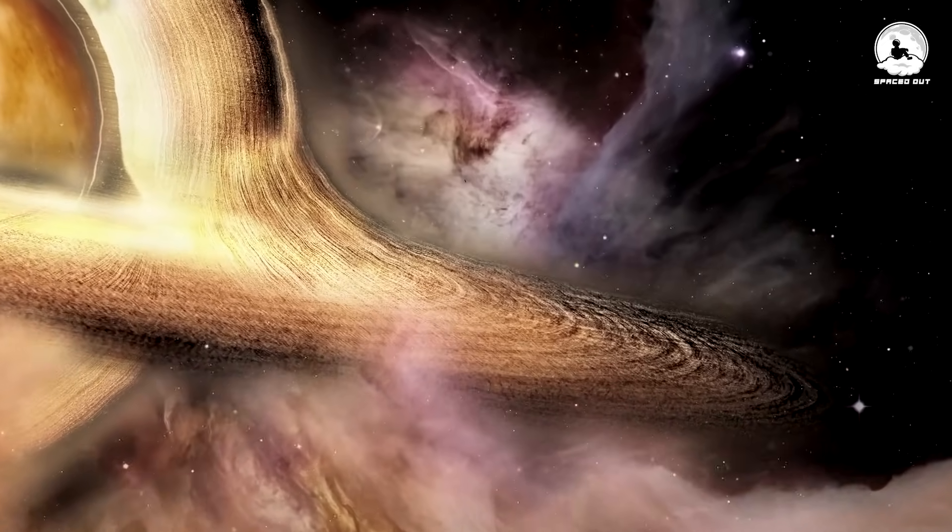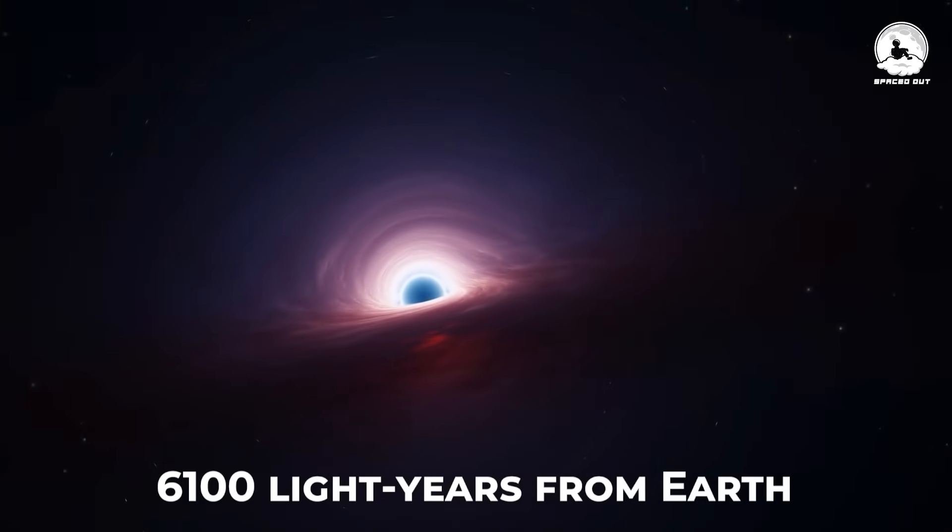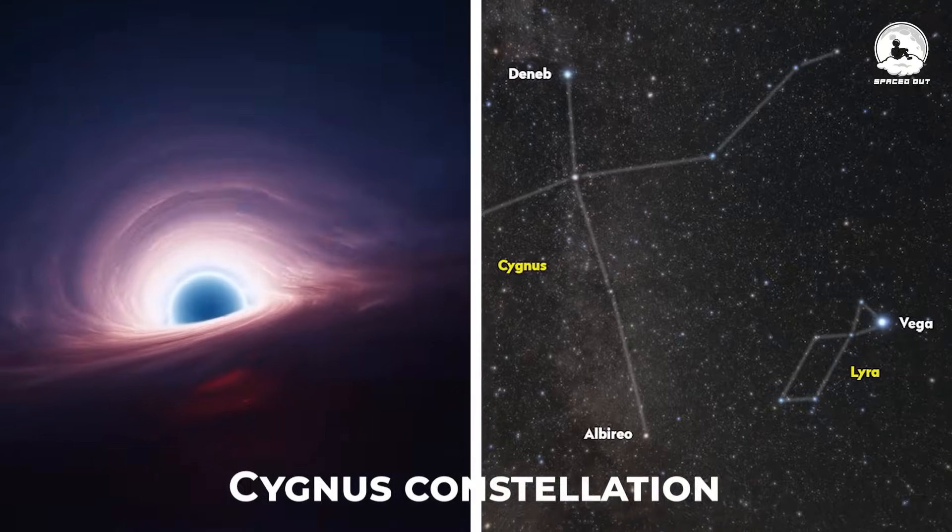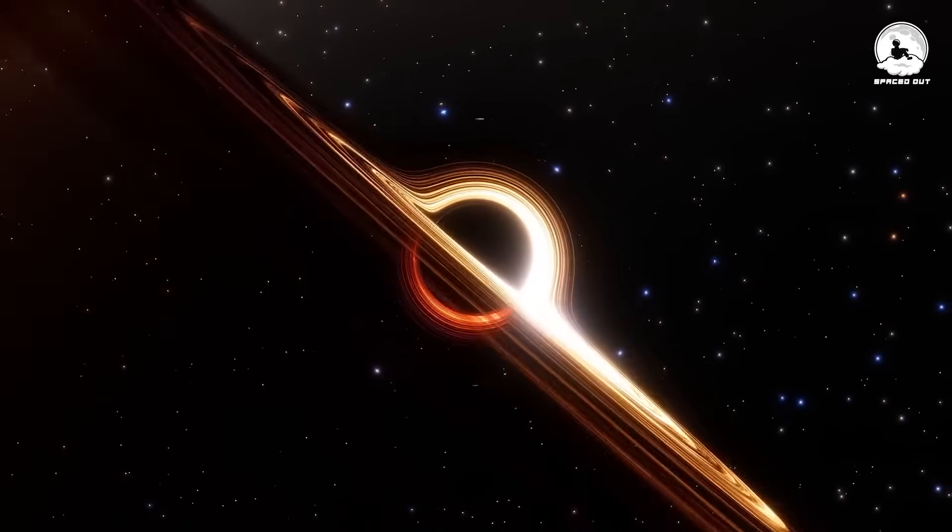The inaugural black hole was located at a distance of 6,100 light-years from Earth within the Cygnus constellation. Notably, this cosmic phenomenon wasn't visually observed initially.